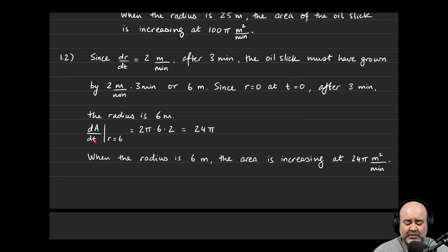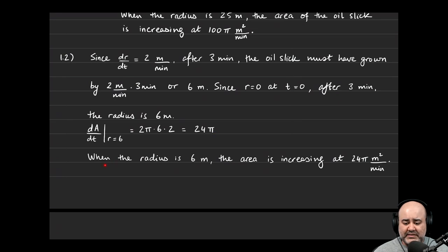To find the rate of change of area with respect to time when the radius is 6 meters, we reuse what we found in part 1: 2π times the radius (6) times dr/dt (2), which gives us 24π. When the radius is 6 meters — equivalently, at t equals 3 minutes — the area is increasing at 24π meters squared per minute.